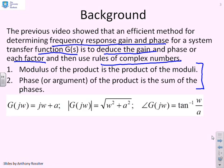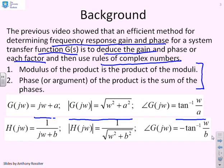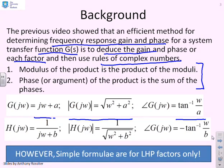We recognised certain things. If we had a factor like s plus a, we could write down by inspection that the gain was the square root of ω² + a², and the phase was tan⁻¹(ω/a). If we had the same factor in the denominator, we got similar expressions. The caveat is that these simple formulas are for left half plane factors only, where a and b are assumed positive. So what do we do if a and b are negative and we have right half plane factors?